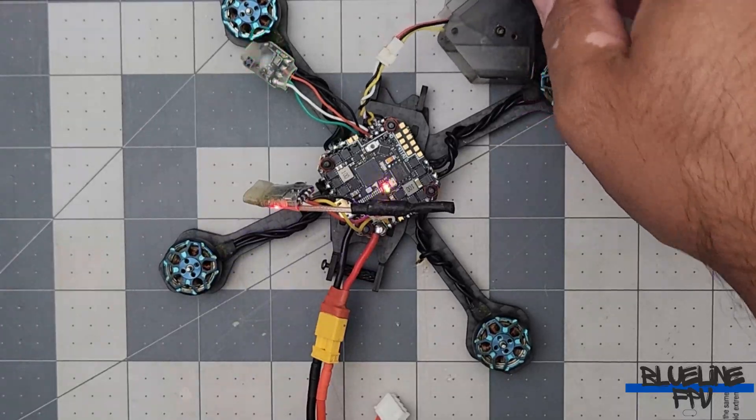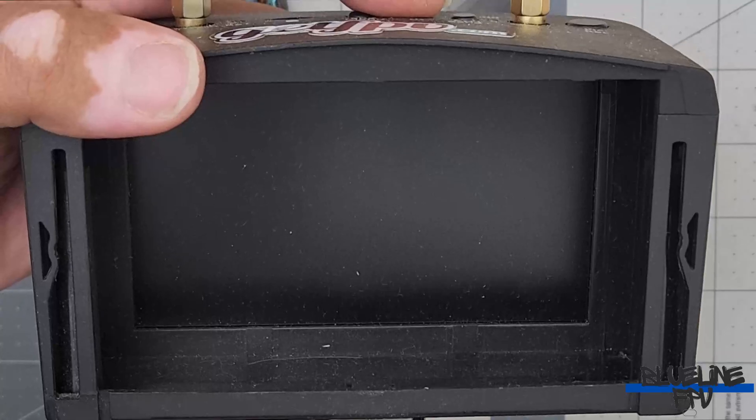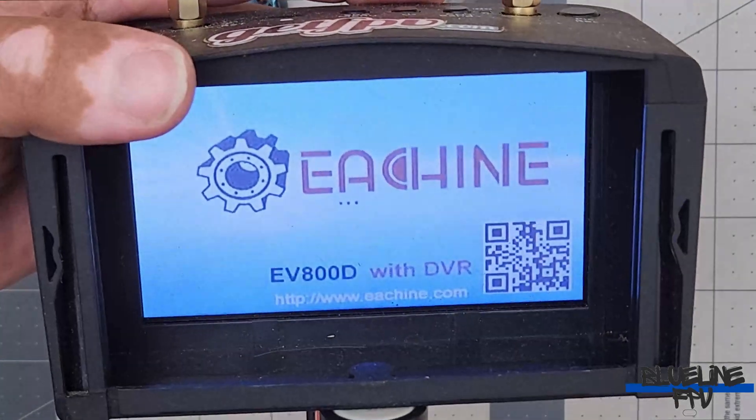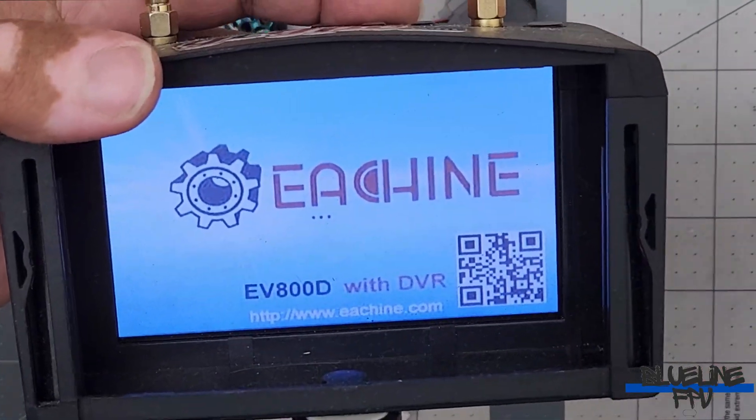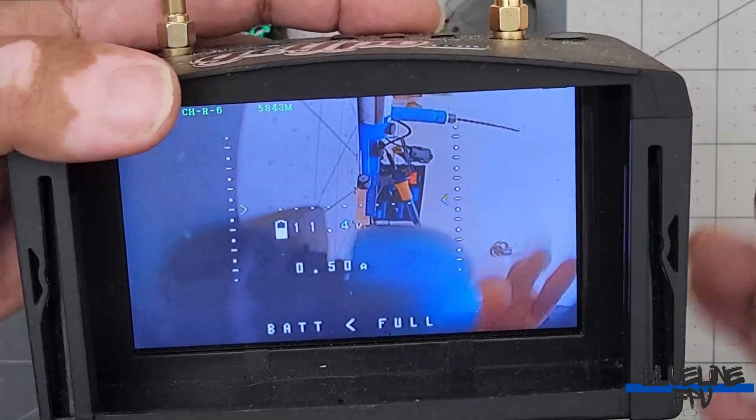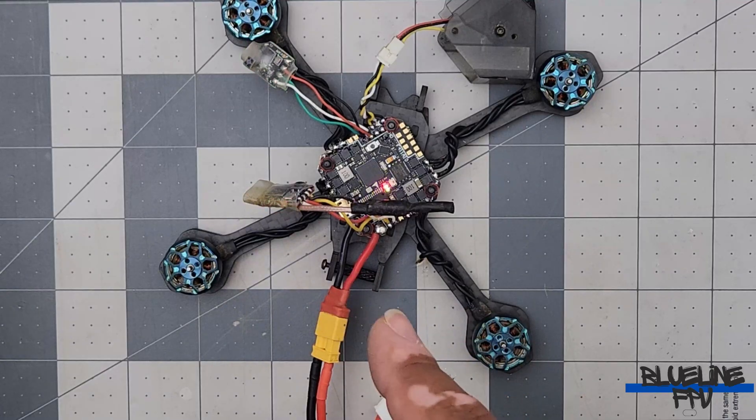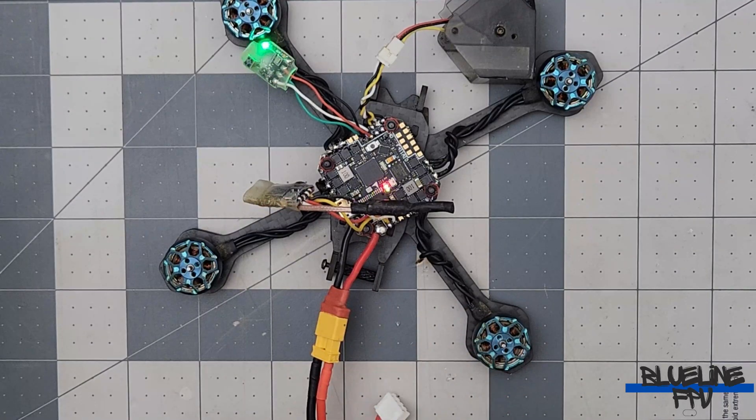All right, now that we got our camera connected, let's see if we have video. All right, we got video. Perfect. So now it is time to take this over to the computer and do some programming on the flight control software.